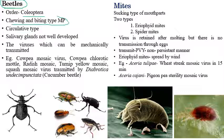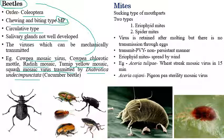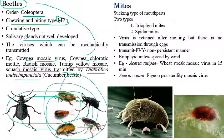Beetles belong to the order Coleoptera and consist of chewing and biting type mouthparts. Mainly circulatory type of insect transmission is involved. The salivary glands of beetles are not well developed. Viral diseases transmitted by beetles include cowpea mosaic virus, cowpea chlorotic mottle virus, radish mosaic virus, turnip yellow mosaic virus, and squash mosaic virus. The cucumber beetle (Diabrotica species) is involved in transmission.